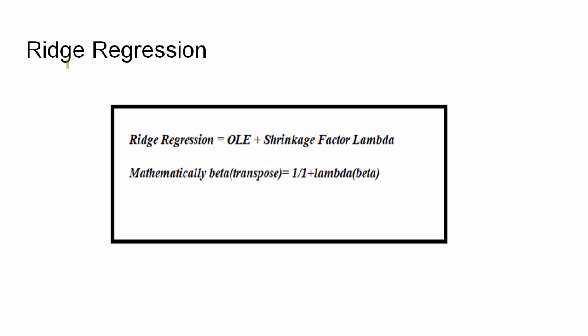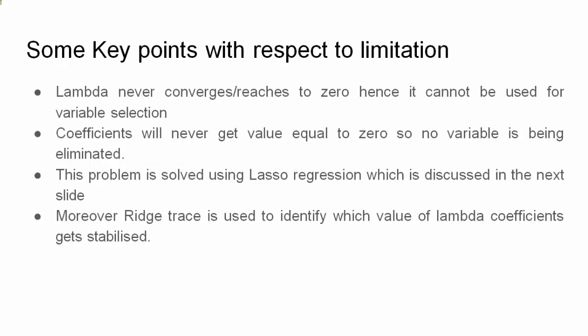Now, what is ridge regression? Ridge regression means if you add shrinkage factor lambda with OLE it becomes a ridge regression. Ridge regression in other mathematical means the beta transpose is equal to 1 divided by 1 plus lambda multiplied by the whole term into beta. This lambda has a great significance because when you increase the value of lambda overall value will decrease. So, there would be a shrinkage factor but again if you look at any point there may be some of the delimitations or demerits which you should point out.